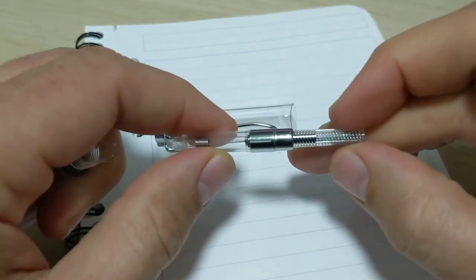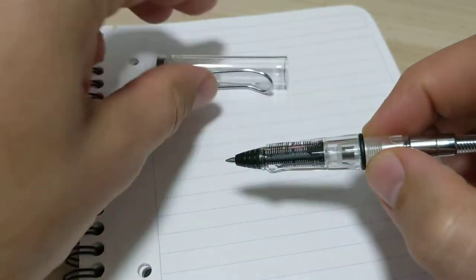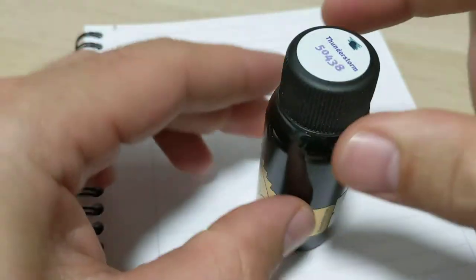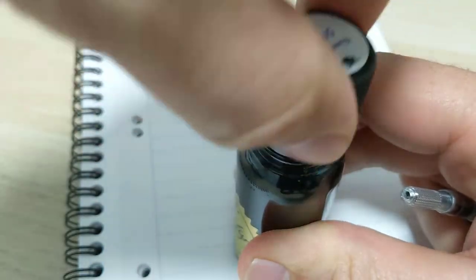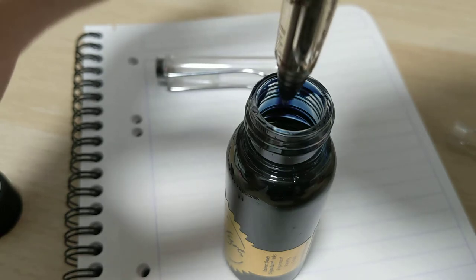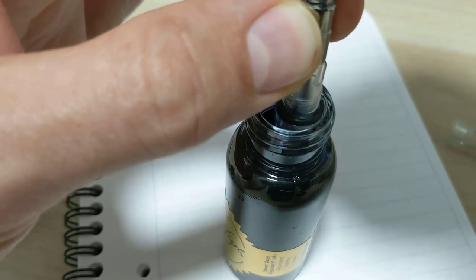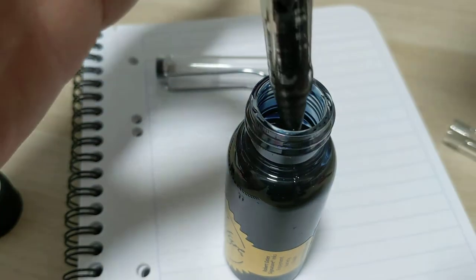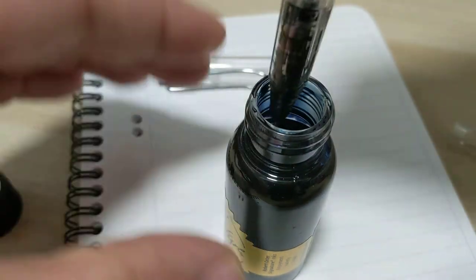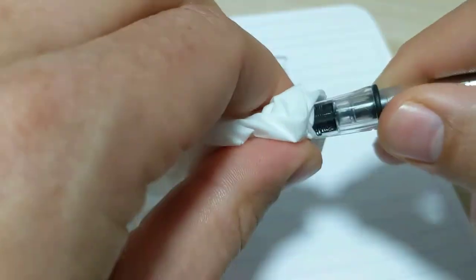You get these guys for 90 cents, comes with the converter which is pretty amazing, and you can fill it up with whatever ink color you like. Today we're going to use a little Robert Oster Thunderstorm. You fill it like you would a regular fountain pen, push it down, pull it up.